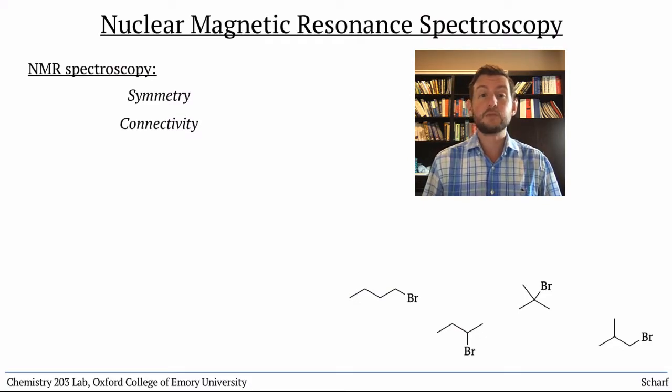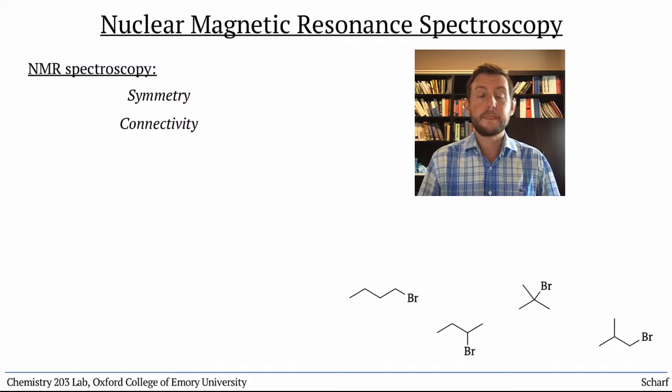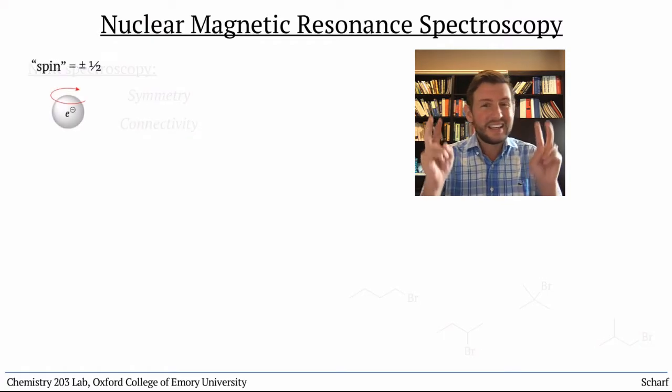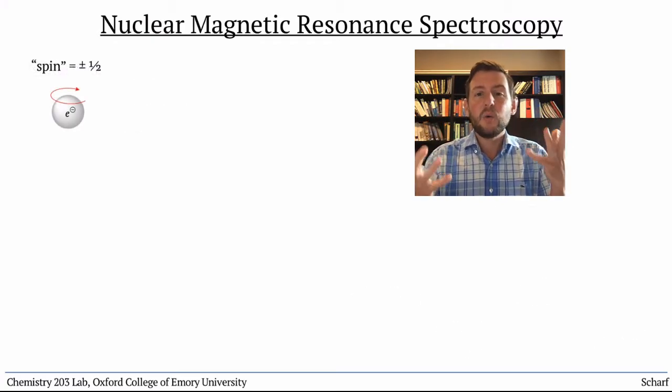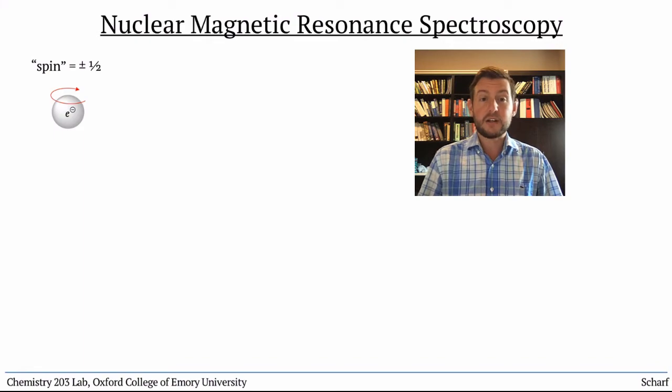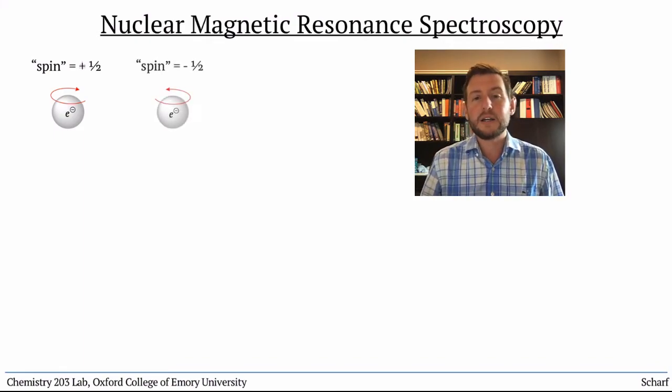Before we see what the actual spectra look like, let's delve into the theory briefly. Do you remember that electrons possess the property known as spin? We often describe electrons as little spinning charges that can spin either clockwise or counterclockwise.